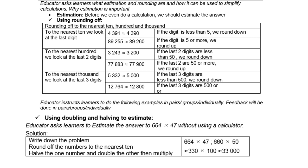Let's look at rounding to the nearest hundred — we look at the last two digits. For instance, 3,243: 43 is below 50, so we round down to 3,200. Then 77,883: 83 is above 50, so we round up to 77,900.